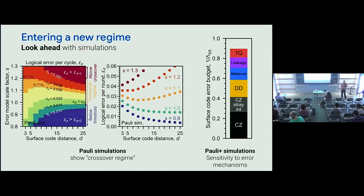Question about the simulation plot: why don't you see a threshold as a flat line or crossing in the second panel? If you wanted to see the standard plot where lines cross each other, that would be vertical cuts of this plot. The plot on the right is horizontal cuts. The place where that crossing happens is basically where those points are all at the same level of error per round as a function of distance — that's where the crossing is happening.